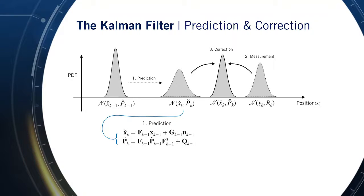We then predict the states at time step k, using our linear prediction model, and propagate both the mean and the uncertainty, the covariance, forward in time.